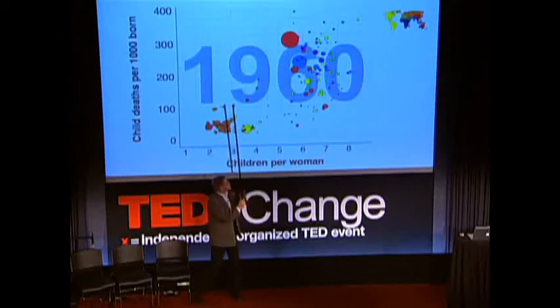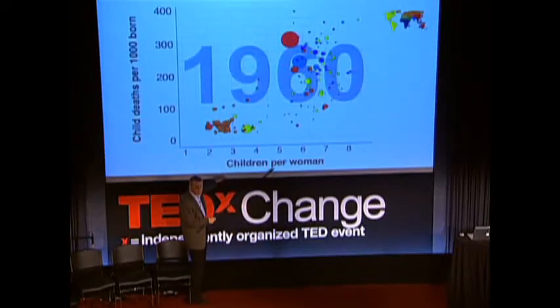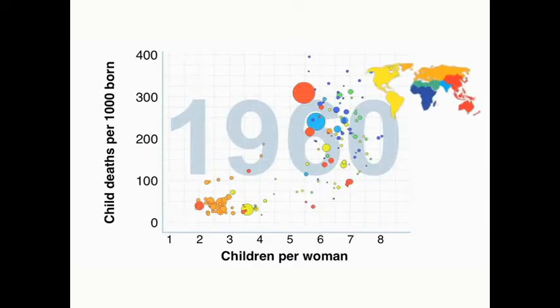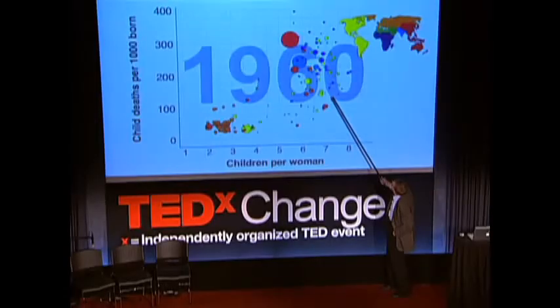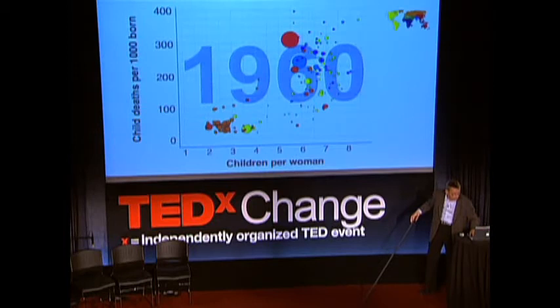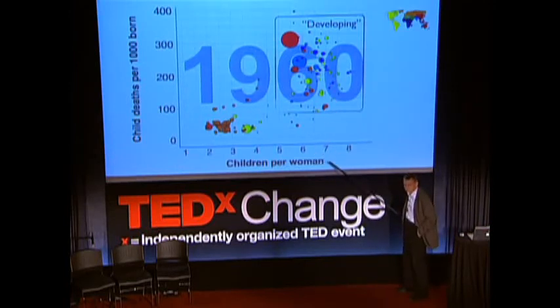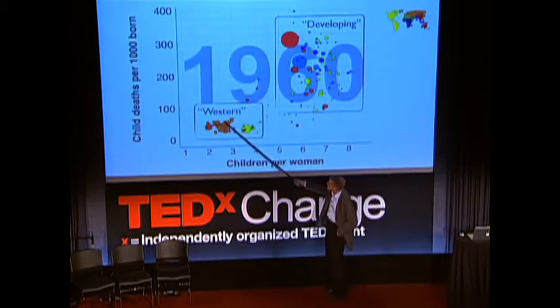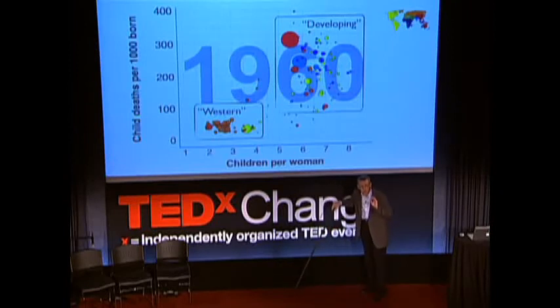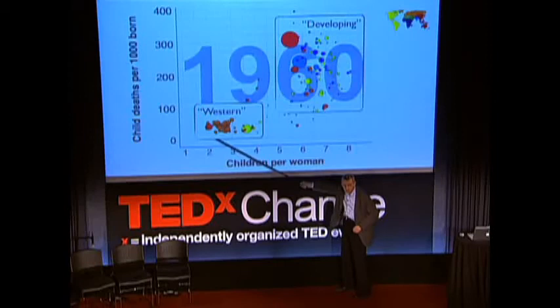Let me bring you to a wider picture of child mortality — the relation between child mortality on one axis and family size on the other: one to eight children per woman. This is 1960, 50 years ago. Each bubble is a country; the color shows the continent — dark blue is Sub-Saharan Africa — and the size of the bubble is the population. Developing countries had high or very high child mortality and family sizes of six to eight. Western countries had low child mortality and small families. I want you to see with your own eyes the relation between falling child mortality and decrease in family size.